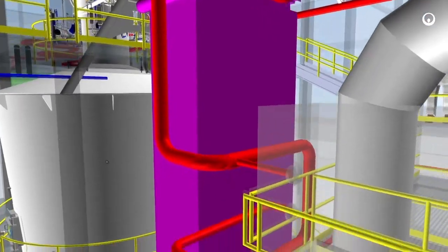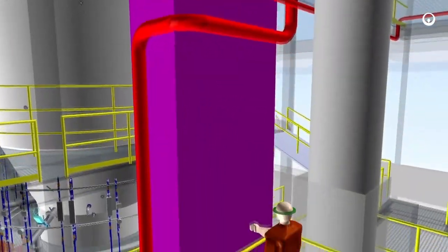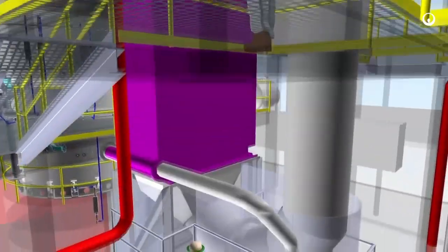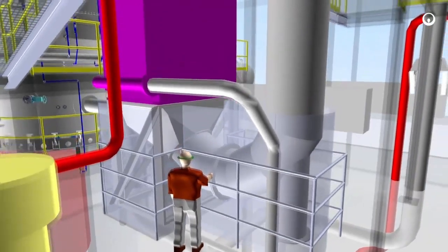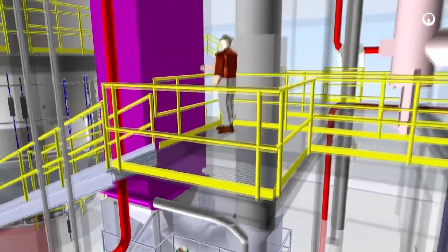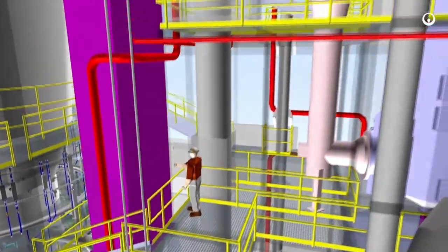Ash-laden flue gas exiting the economizer travels to the second stage of air pollution control. The quencher scrubber where particulate matter, heavy metals, and gaseous pollutants are removed.